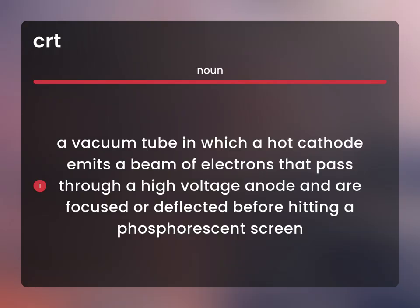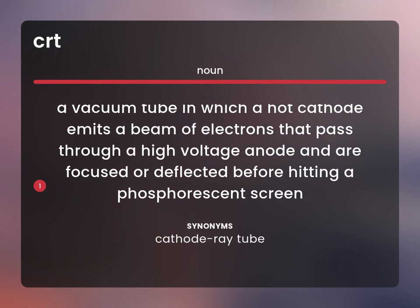A vacuum tube in which a hot cathode emits a beam of electrons that pass through a high-voltage anode and are focused or deflected before hitting a phosphorescent screen. Cathode Ray Tube.